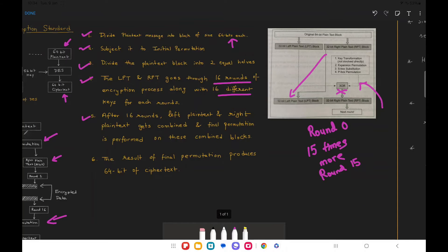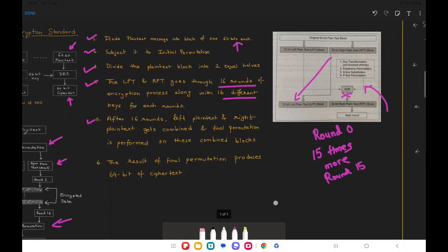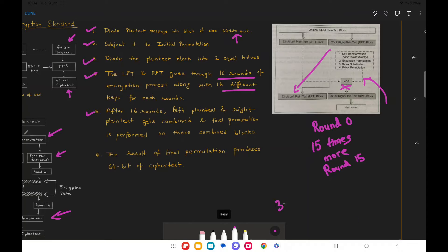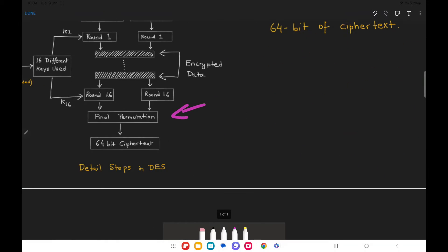So once we have obtained the last 32-bit RPT and 32-bit LPT we are going to combine them to form a 64-bit ciphertext. But this is not the final ciphertext. Why? Because if you see carefully the final ciphertext is obtained after applying a final permutation round to the 64-bit ciphertext which we got just now.